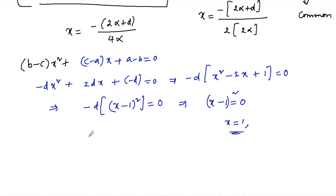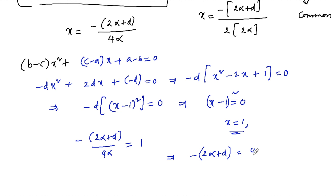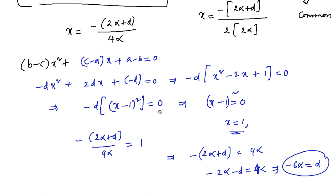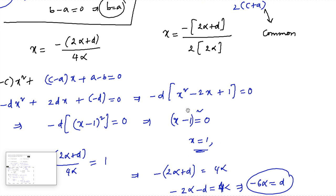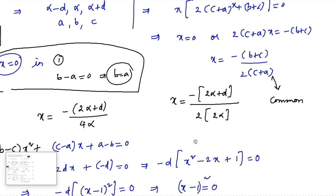So x = −(2α+d) divided by 4α must equal 1. This gives −(2α+d) = 4α, or −2α − d = 4α, which implies −6α = d. So the common difference is d = −6α.